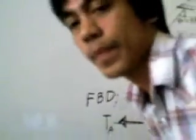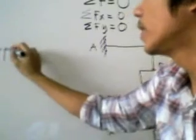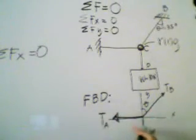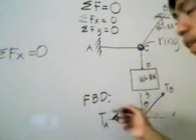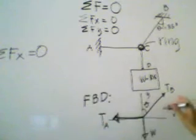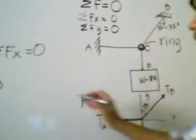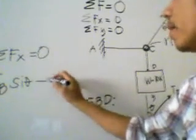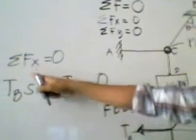We write summation of forces in x equals zero. From the drawing, two forces act in the x-direction: TA to the left, which is negative, and the x-component of TB acting to the right. Taking positive to the right, we write: TB sine theta minus TA equals zero. This is our first equation of equilibrium.